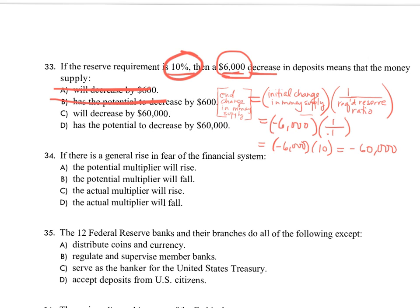So we would choose D over C: the money supply will decrease by $60,000. The wording in D says it has the potential to decrease by $60,000, which is better than C's more assured wording. To reach exactly negative $60,000, the assumption would be that every single person is putting every dollar into the bank rather than holding anything outside the banking system. The moment you hold money in cash outside of deposit institutions, it can't be loaned out, and that's where the money multiplier process lives.